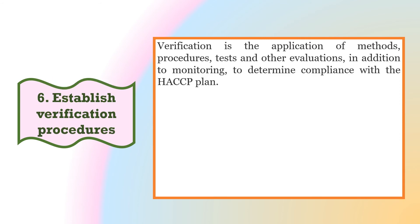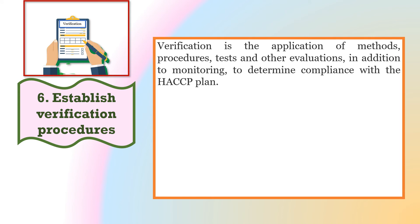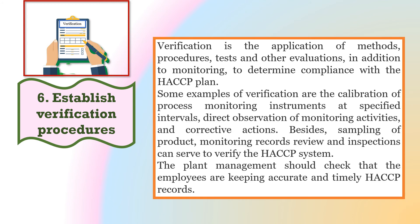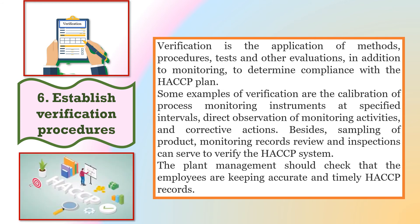The sixth principle is to establish verification procedures. Verification means cross-checking. It is the application of methods, procedures, tests or other evaluation in addition to monitoring to determine compliance with the HACCP plan. Some examples of verification are the calibration of process monitoring instruments at specified intervals. Plant management should check that employees are keeping accurate and timely HACCP records.